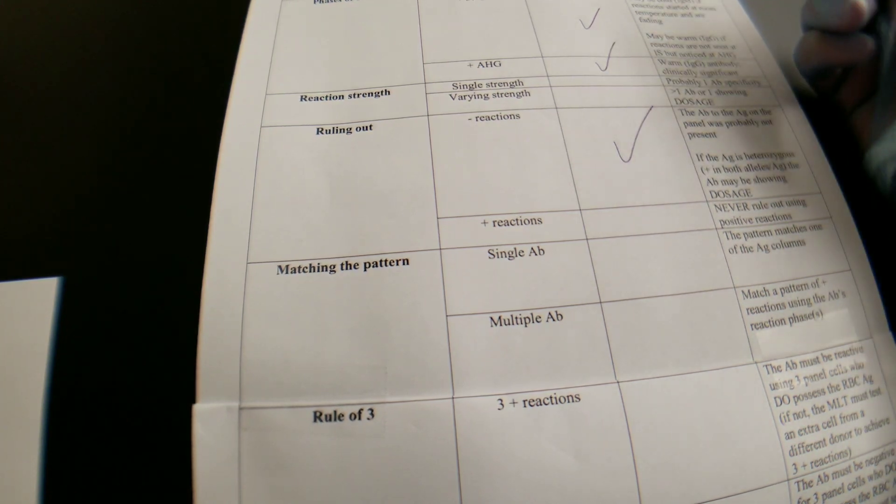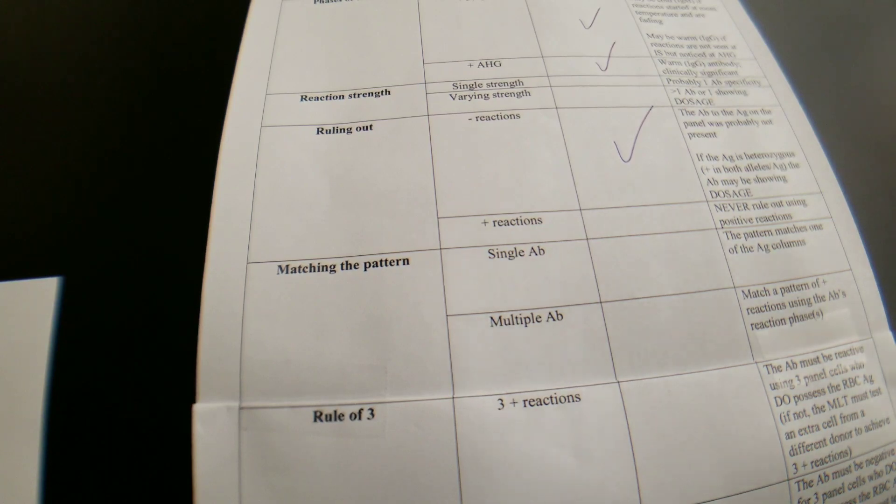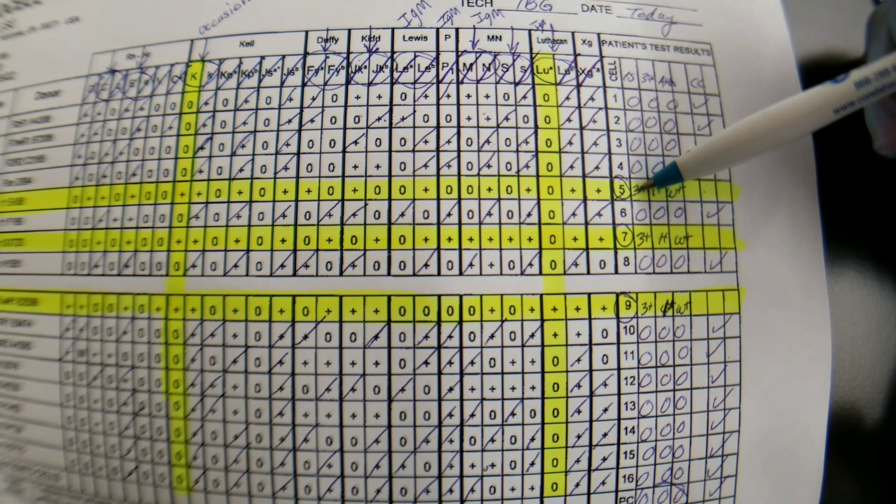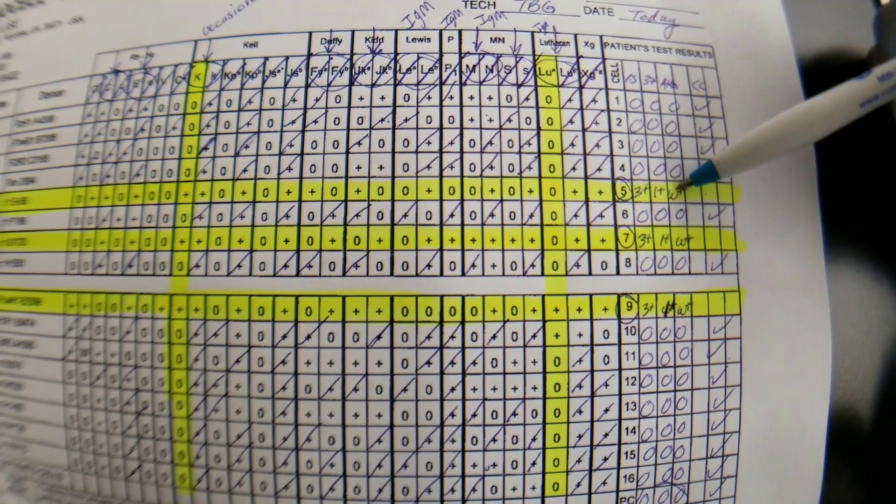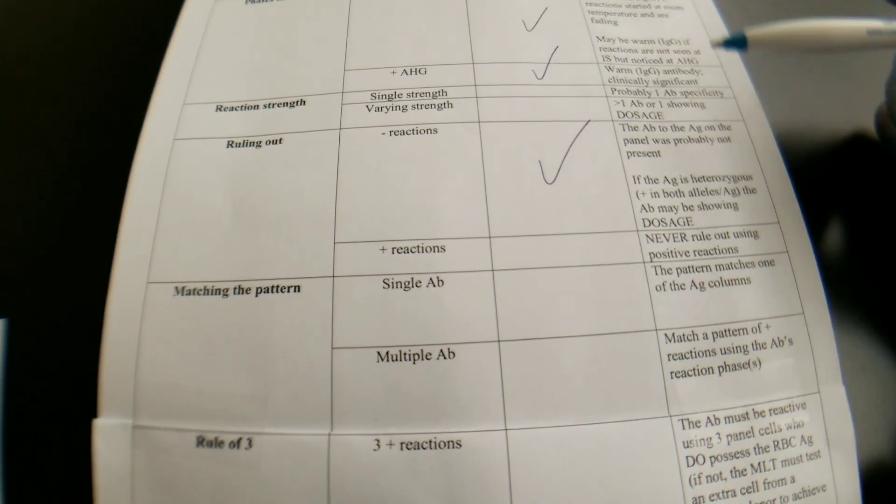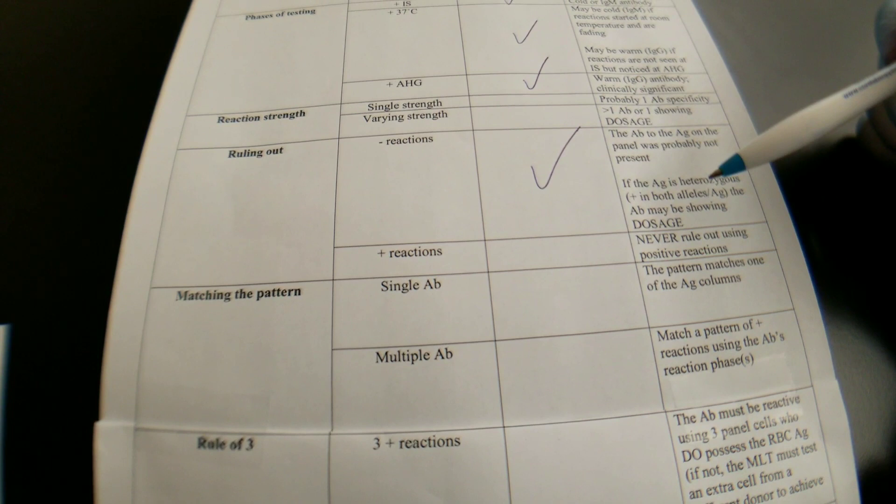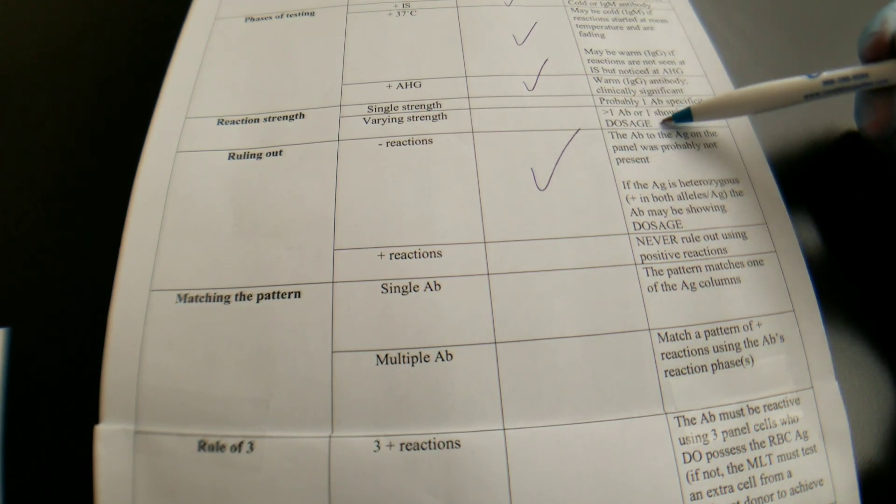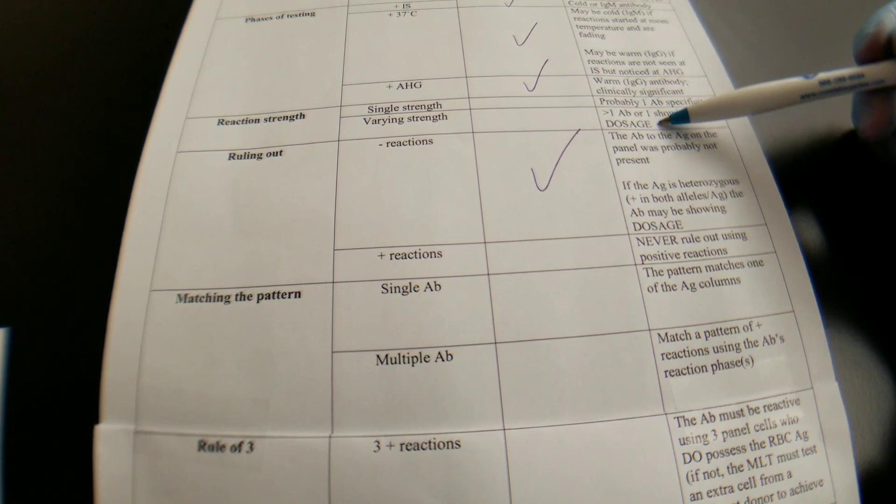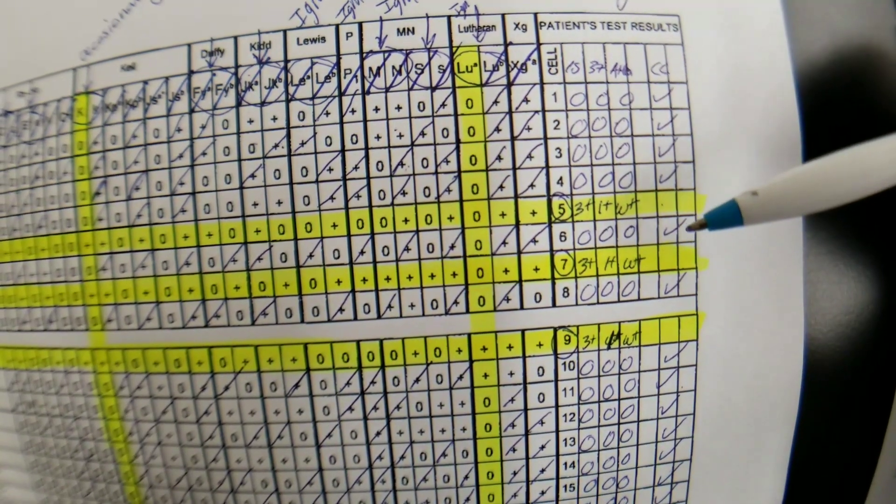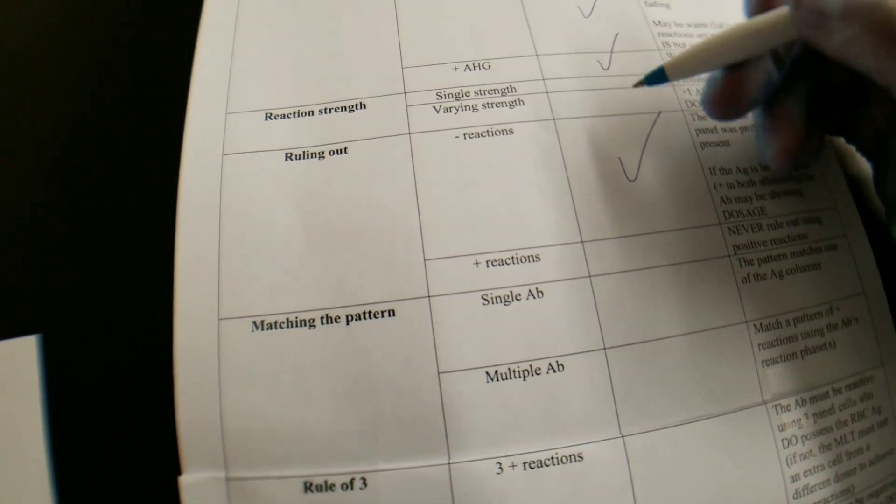The antibody that we have is showing varying strength only in that it's stronger in the immediate spin and then waning throughout the rest of the reaction phases. So the question here asking, the positive reactions, do they show varying strength or not? It does, but not in the way that it's asking here. Okay, so all of the reactions in those lines are the same strength in each phase. Okay, so we're assuming we have one antibody there.